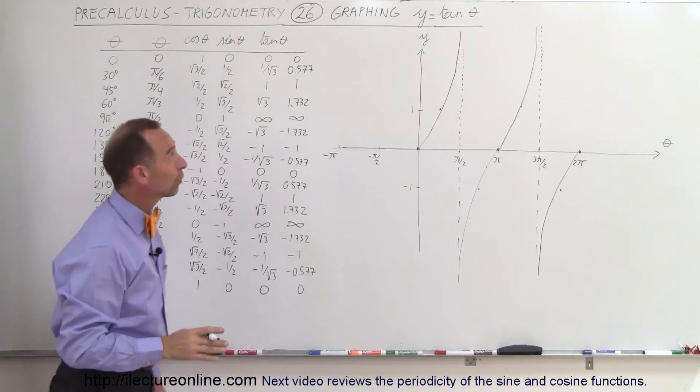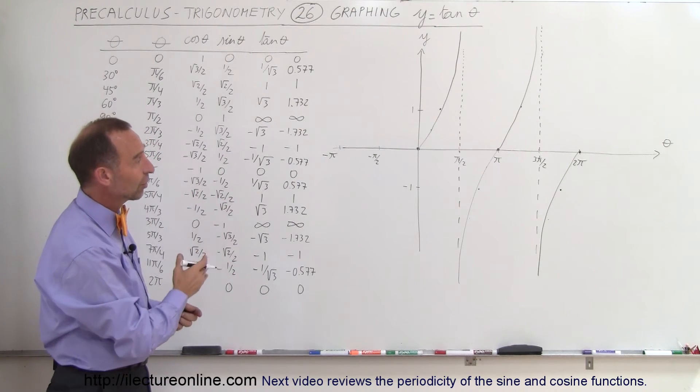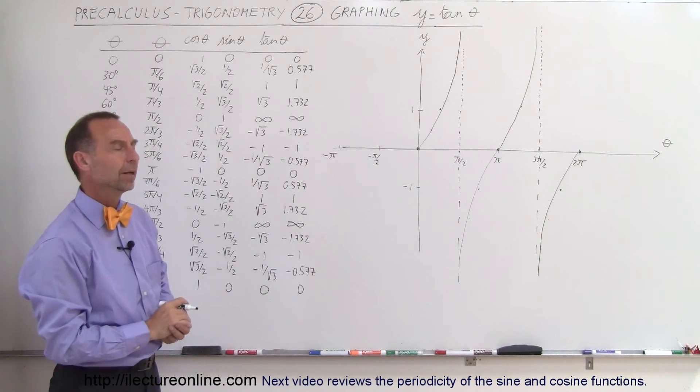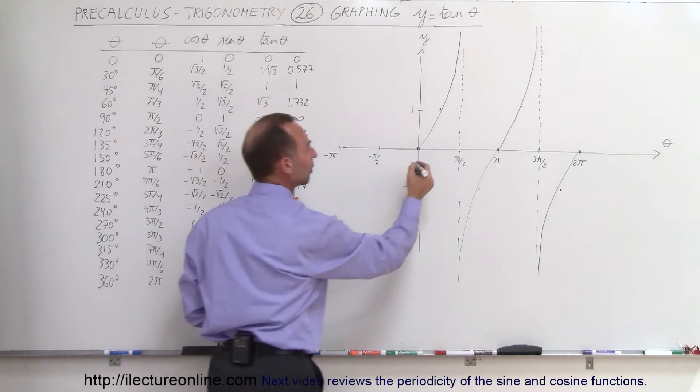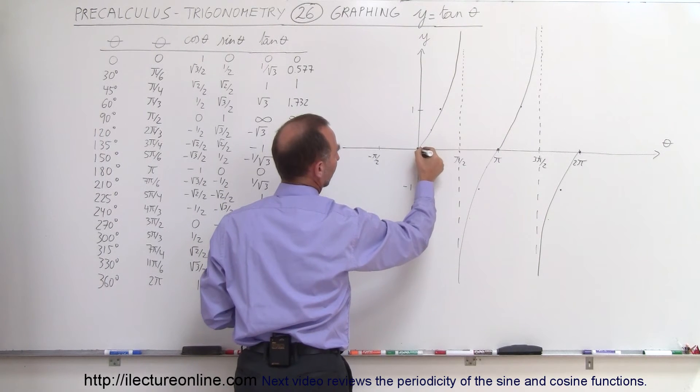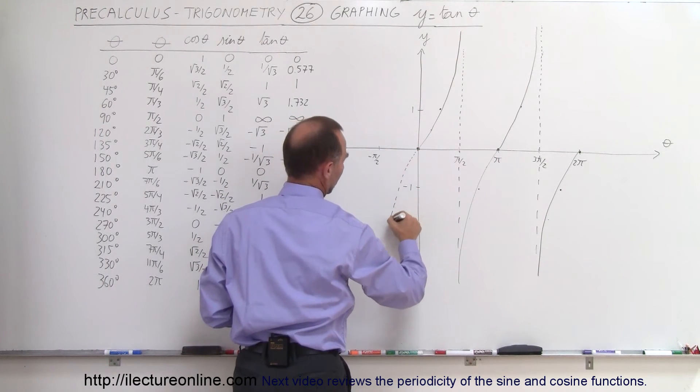So that's a good representation for the tangent of theta between 0 and 2 pi. What we can assume then is that this will continue over here, just like it repeats. And so we can assume that the curve will continue over here.